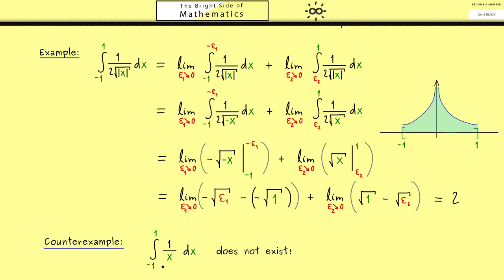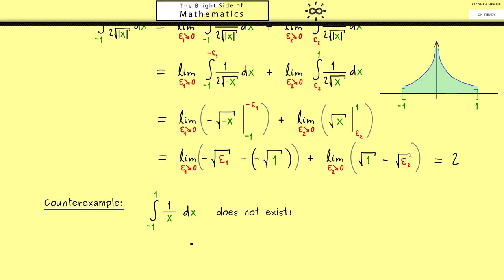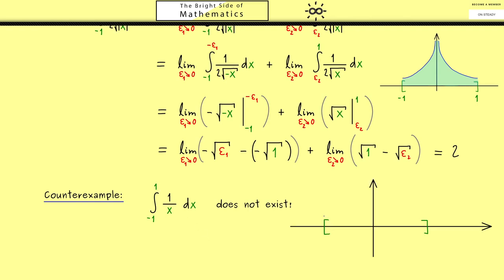This is simply because the antiderivative is the logarithm, which goes to minus infinity when epsilon goes to 0. However, if you look at the graph of the function, then you might think that this integral exists. This is simply because 1 over x is a symmetric function, an odd function.